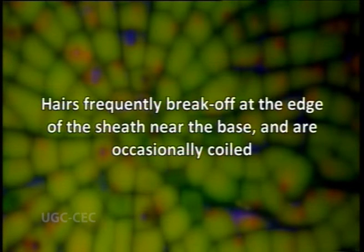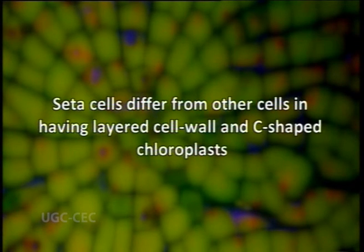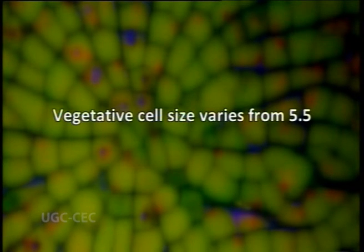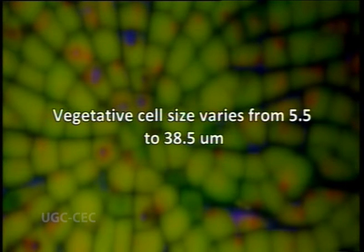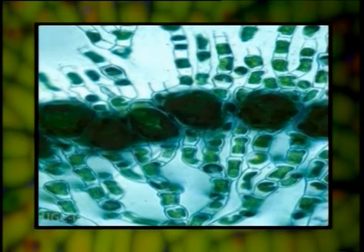The hairs frequently break off at the edges of the sheath near the base and are occasionally coiled as well. The setae cells differ from other cells in that they have a layered cell wall and C-shaped chloroplasts. The vegetative cell size varies from 5.5 to 38.5 micrometers depending upon the species.